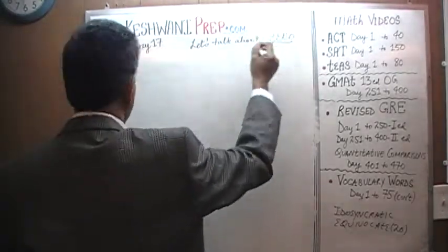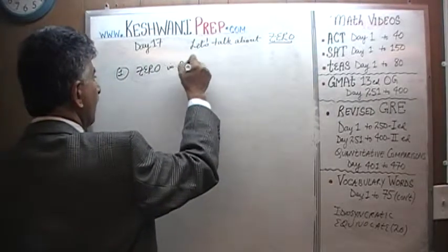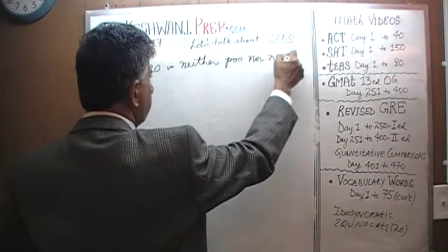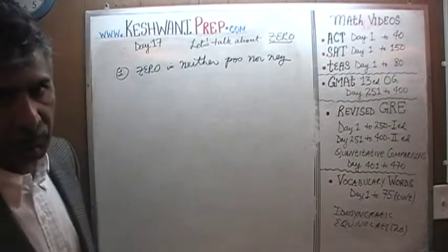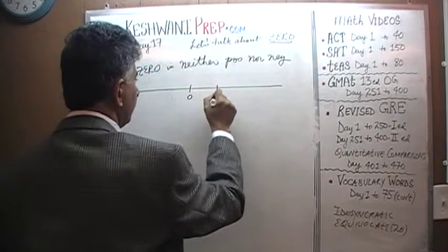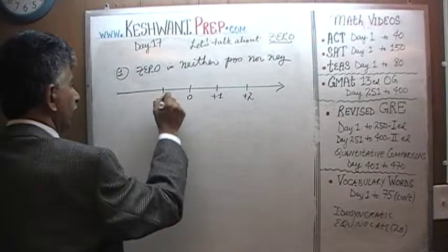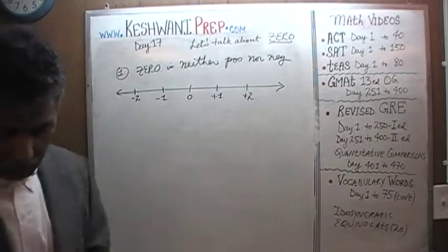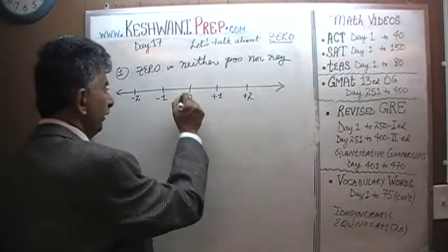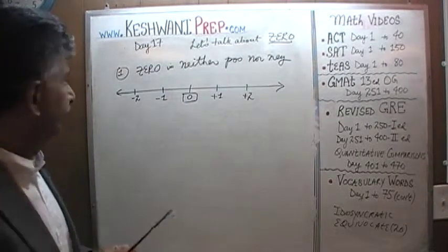The first point: zero is neither positive nor negative. If you look at the number line, here is zero; to the right we have positive one, positive two, and so on. To the left we have negative one, negative two, and so on. On the left of zero we have negative quantities; on the right we have positive quantities. Zero itself is neutral — it is neither positive nor negative.